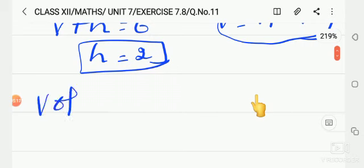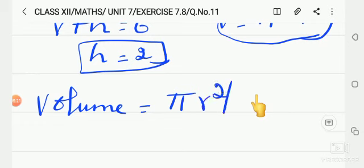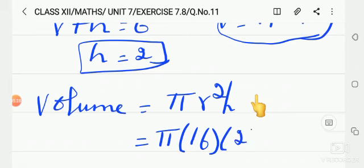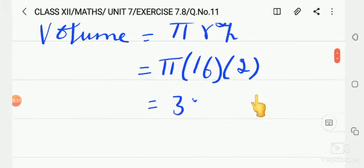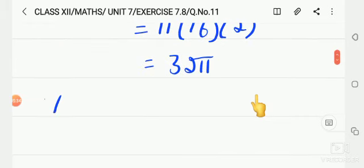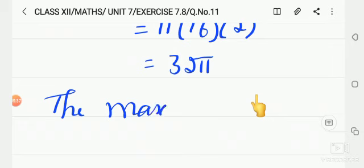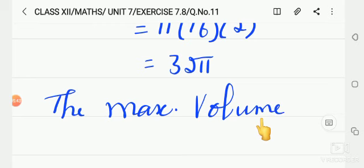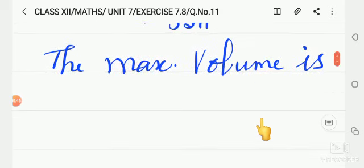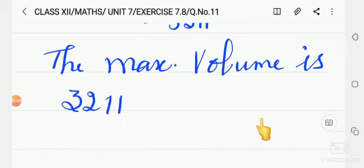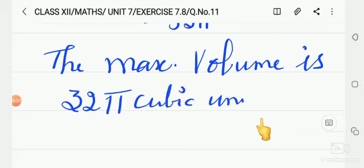Now substitute in the volume of a cylinder formula. Volume of a cylinder formula is pi r square h. Pi, r here is 4, so 4 square is 16. H here is 2. Therefore we have 32 pi. Therefore the maximum volume is 32 pi cubic units. Okay. Thank you children.